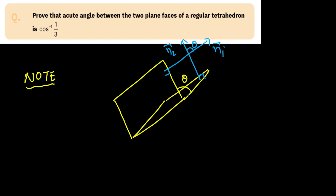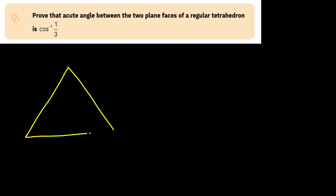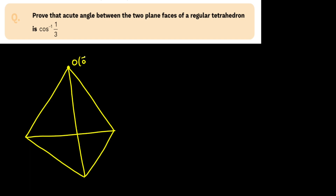Let's start with the tetrahedron. In order to draw a tetrahedron, first we need to draw a triangle like this, and then we need to extend one side like this, and if I join all this we will get a tetrahedron. Let's say one of the vertices is the origin, since the position vector is very easy to write. The other points are A, B, and C, with position vectors A vector, B vector, and C vector respectively.